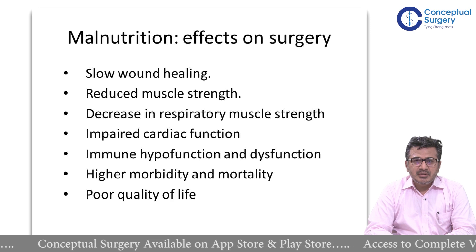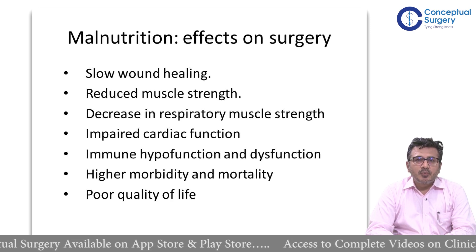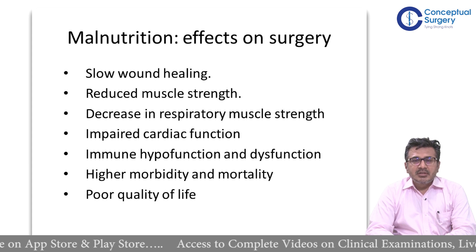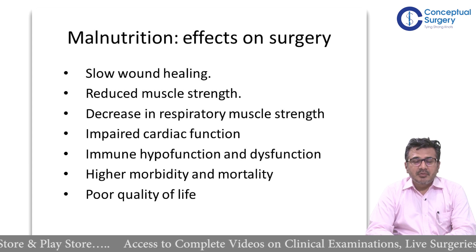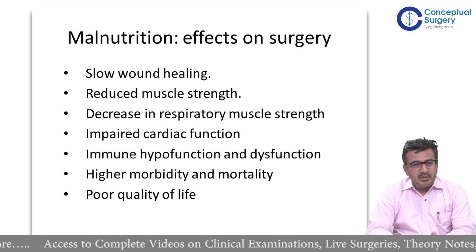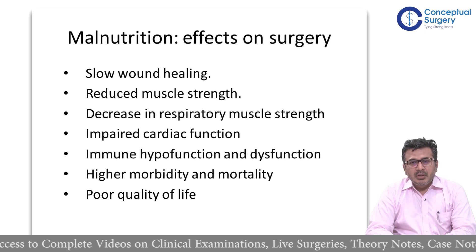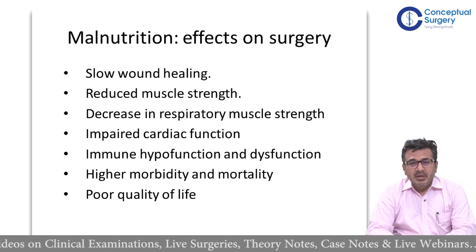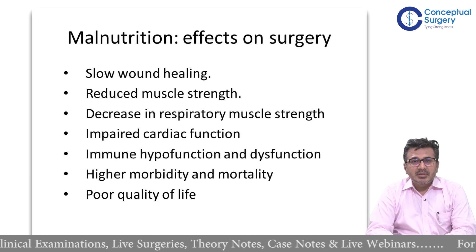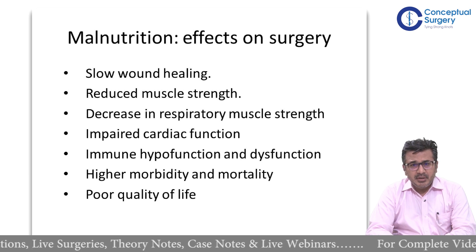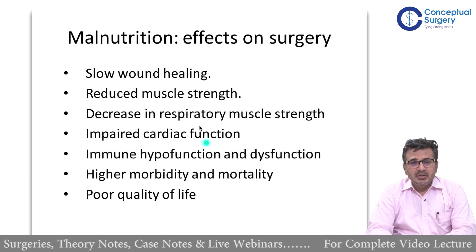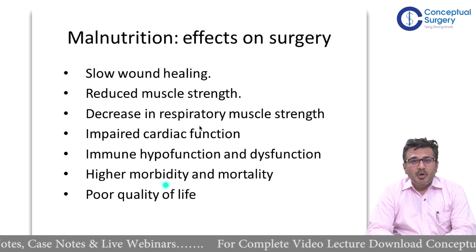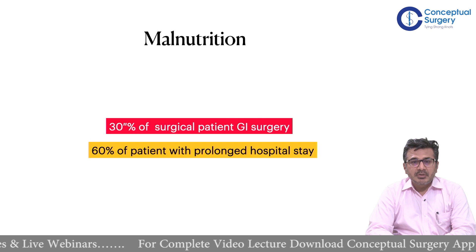How does malnutrition affect surgery? Malnutrition will slow wound healing and reduce muscle strength of the body. It will also decrease respiratory muscle strength, which is very important. Imagine a patient on a ventilator — if there is poor respiratory muscle reserve, the patient will not breathe properly and can develop consolidation. There will also be impaired cardiac function, immune hypo-function and dysfunction.